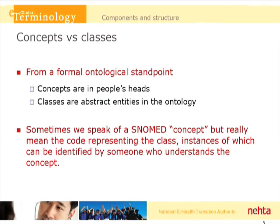Just to reiterate about concepts and classes: from a formal ontological standpoint, concepts are in people's heads, while classes are the abstract entities in the ontology. So sometimes we speak of a SNOMED concept, but what we really mean is the code representing the class, instances of which can be identified by someone who understands what the concept means. So going forward I'll use the word concept when I really mean classes.